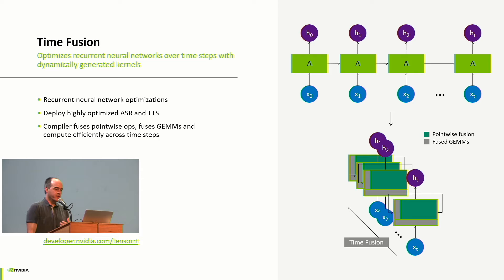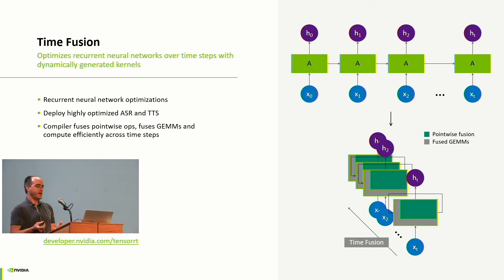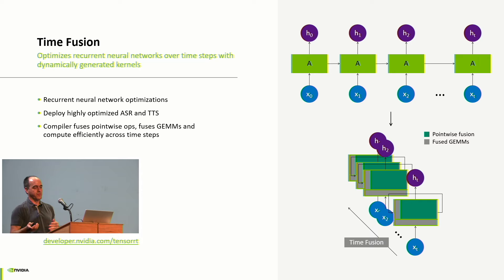There's also time fusion in RNNs, where you fuse across a sequence of inputs, allowing for more efficient RNNs. You execute more efficiently over time, not pushing data out to memory and increasing the overall efficiency of your network.